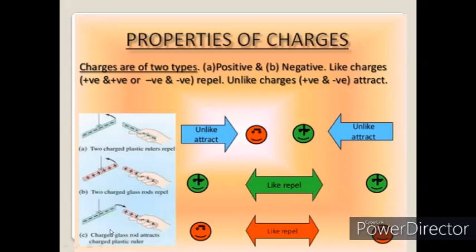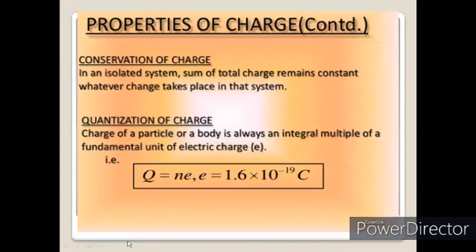The next property is conservation of charge. In an isolated system, the sum of total charge remains constant whatever change takes place in that system. When an object is charged, electron transfer takes place — one object becomes positively charged and another becomes negatively charged. If you see the total number of charges in the system as a whole, that remains constant. So charge is conserved.